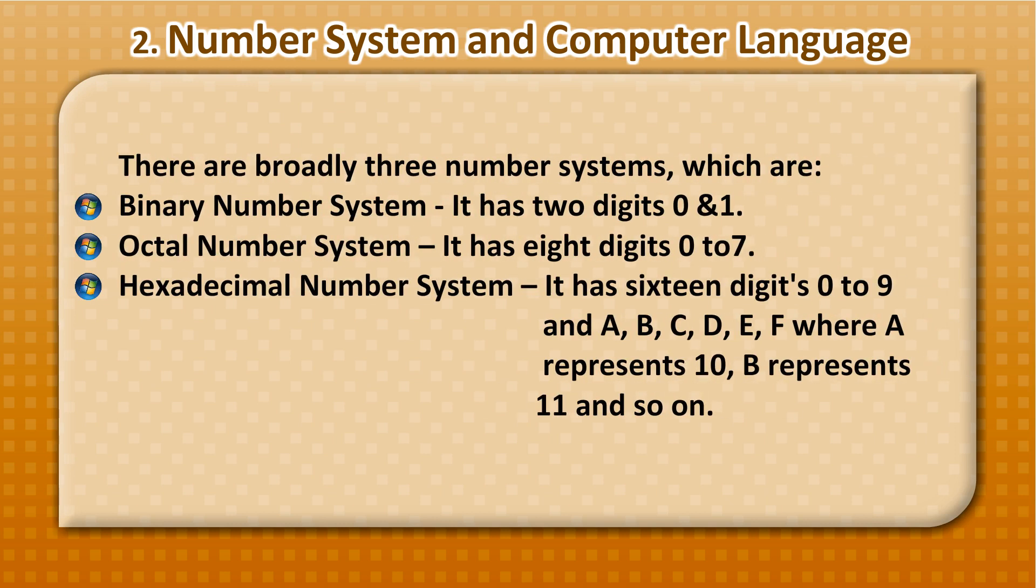There are broadly 3 number systems: Binary number system has 2 digits, 0 and 1. Octal number system has 8 digits, 0 to 7. Hexadecimal number system has 16 digits, 0 to 9 and A, B, C,